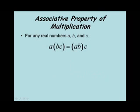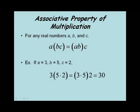Now let's look at the associative property of multiplication. For any real numbers a, b, and c, a times (b times c) equals (a times b) times c. Whether we multiply the second two first then multiply the first, or multiply the first two then multiply the third, we get the same answer. Letting a equal 3, b equal 5, c equal 2: 3 times (5 times 2) is 3 times 10, which is 30. And (3 times 5) times 2 is 15 times 2, which also equals 30.